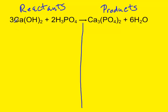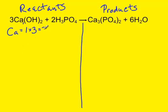I always like to start from the left-hand side and work our way over. We'll start with Ca — calcium. We're going to ask the same questions for every single element we come across. First, is there a subscript? If there isn't, we know it's an invisible one. Is it inside parentheses? No, it is not. Is there a coefficient? Yes, there's a 3. So 1 times 3 gives us 3.